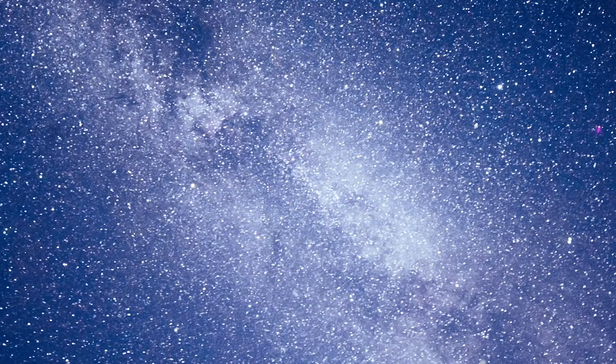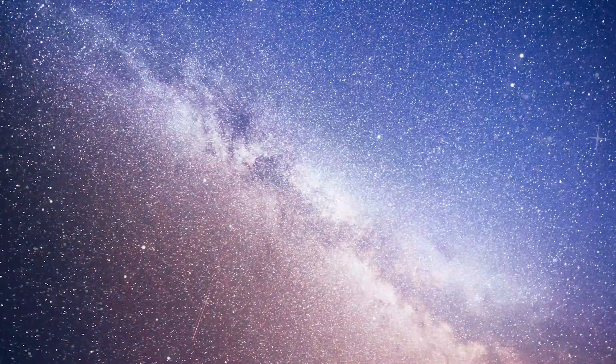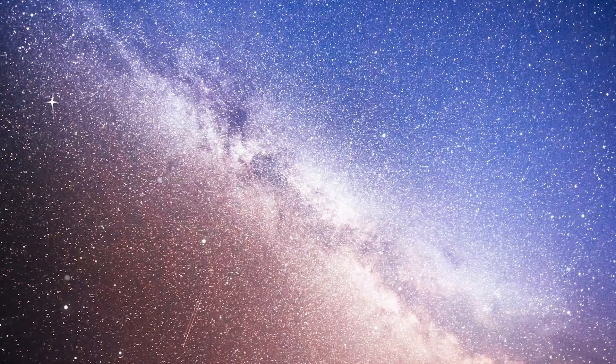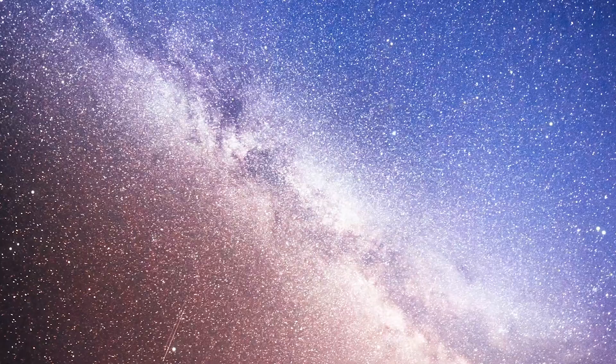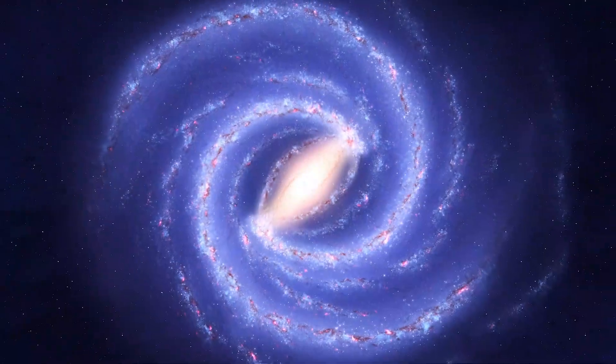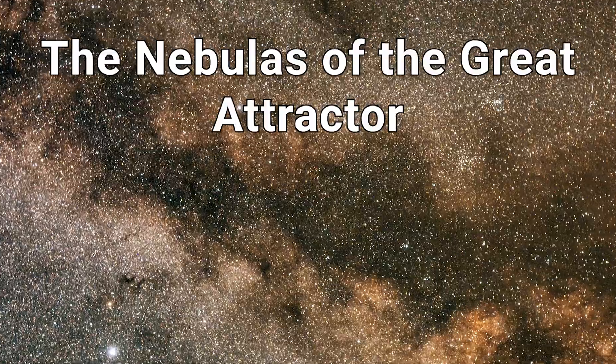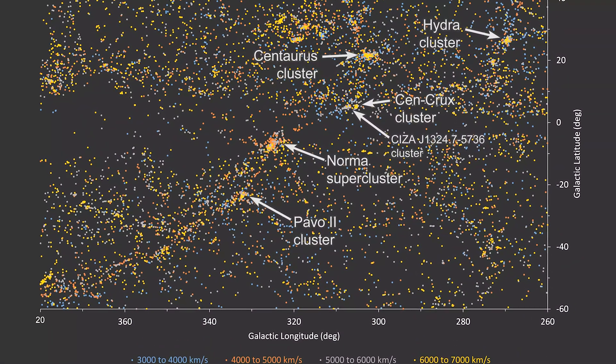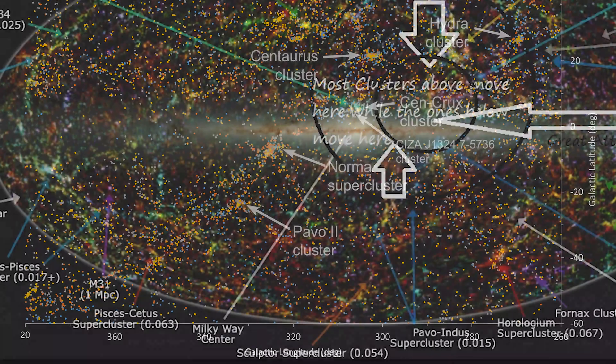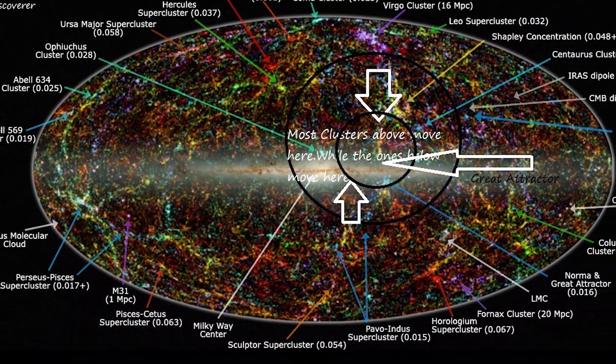The sun races through the Milky Way at 230 kilometers per second, nearly 800,000 kilometers per hour, orbiting the galactic center 26,000 light-years away. And our galaxy itself is moving too, drifting toward the Great Attractor within the Laniakea supercluster at nearly 2 million kilometers per hour, completing one galactic orbit every 230 million years.